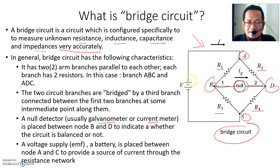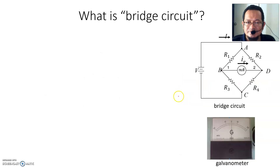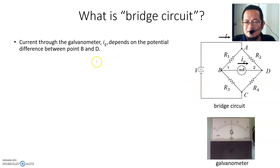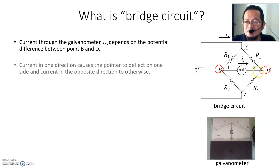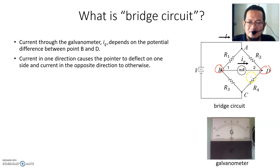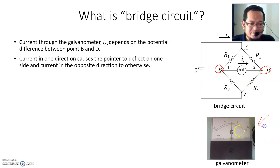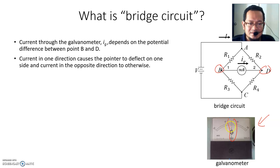A voltage supply — it can be a battery — is placed between nodes A and C to provide a source of current through the resistances. The current through the galvanometer IG depends on the voltage at B and D. Current in one direction causes the needle to deflect to one side, and current in the opposite direction deflects it the other way, as shown in this picture.